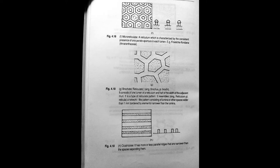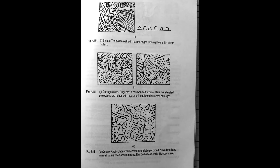Then we have scabrate. It has more or less parallel ridges that are narrower than the spaces separating them. Next we have striate. The pollen wall here is seen to have narrow ridges forming the muri in striate pattern.